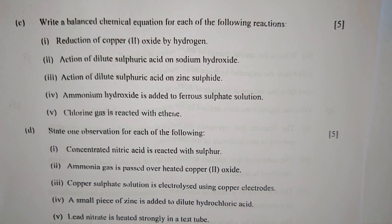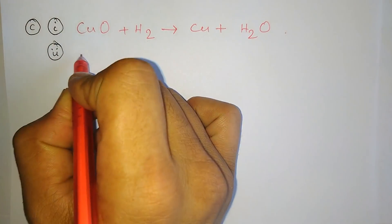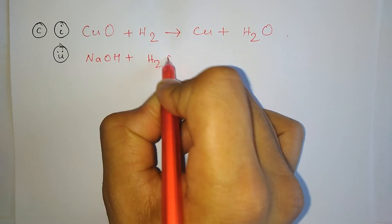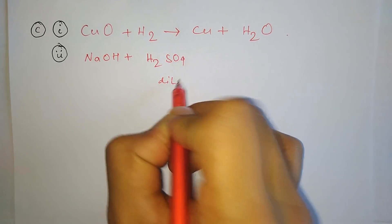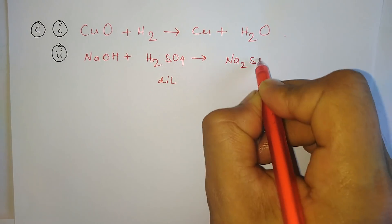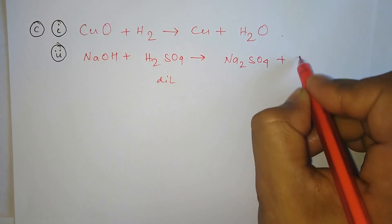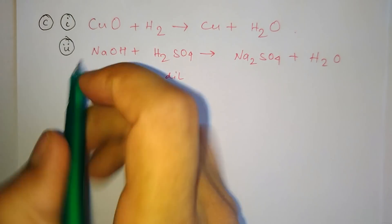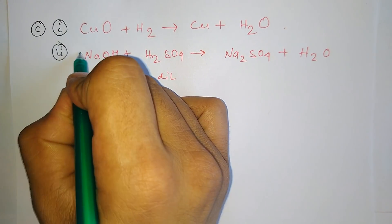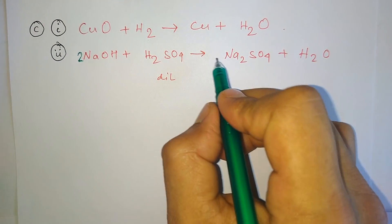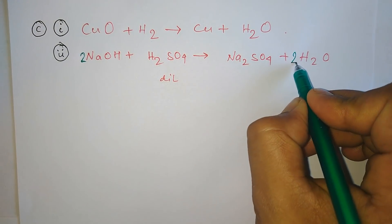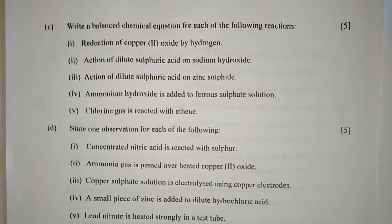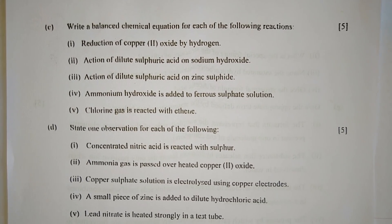Part two: Action of dilute sulfuric acid on sodium hydroxide. The reaction will be sodium hydroxide reacts with dilute sulfuric acid to give sodium sulfate and water. If you balance them then it will be 2NaOH reacts with H2SO4 to form Na2SO4 and 2H2O. Part three: Action of dilute sulfuric acid on zinc sulfide.